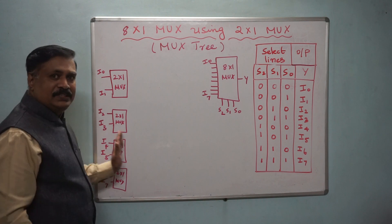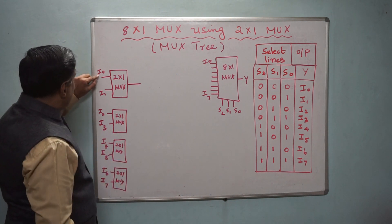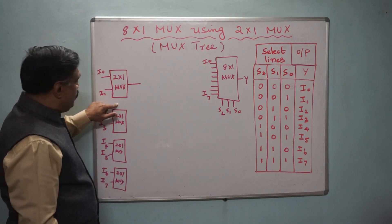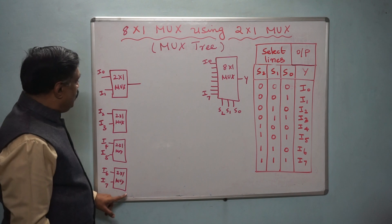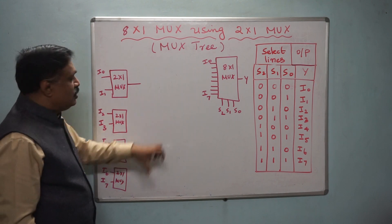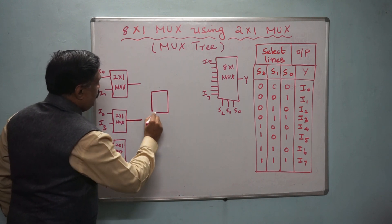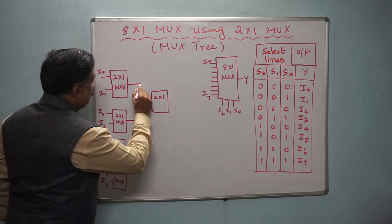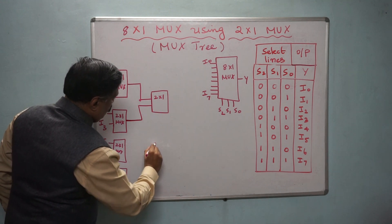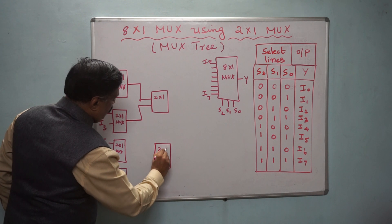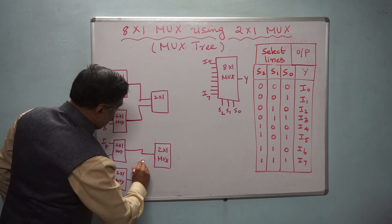All 4 first-level MUXes will generate 4 outputs. The first will generate i0 or i1 depending on the select line, the second i2 or i3, the third i4 or i5, and the fourth i6 or i7. Now out of 4 outputs we need to select further, so we require two more 2 by 1 MUXes at the second level — one receiving the outputs of the first pair, and another receiving the outputs of the second pair.